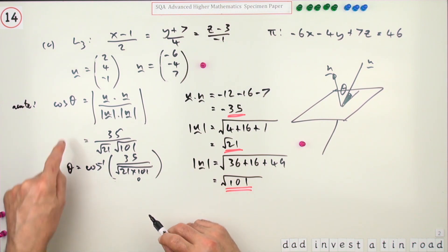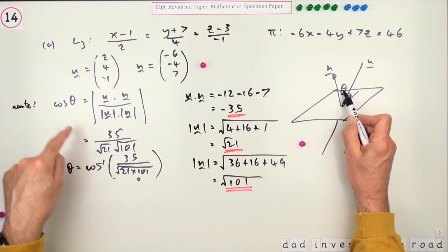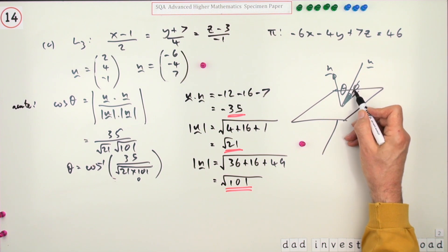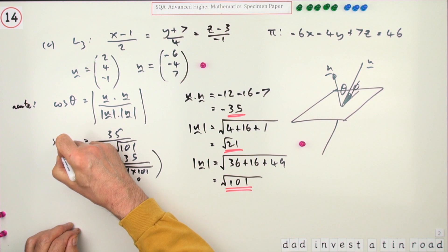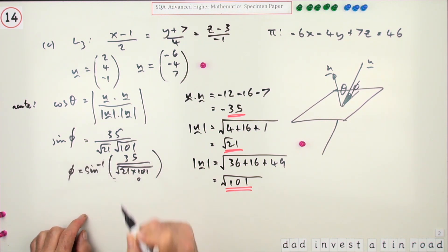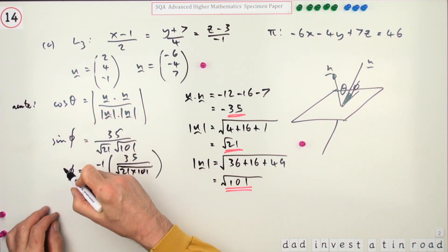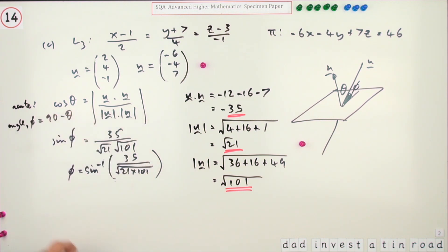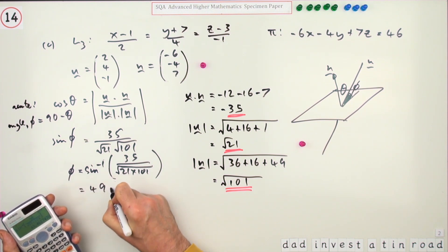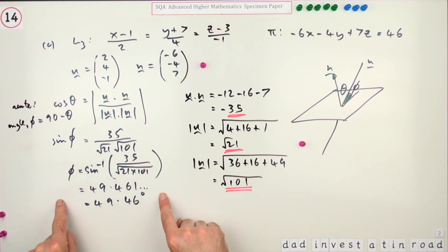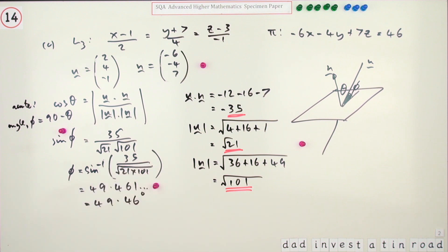An alternative approach: since cosine of an angle equals the sine of its complement, if cos theta equals 35 over root 2121, then the sine of the required angle phi equals that same value. So phi equals inverse sine of 35 over root 2121, which gives 49.461 and so on, rounding to 49.46 degrees — the same answer. This approach earns one mark for changing the angle and one mark for carrying through the calculation.